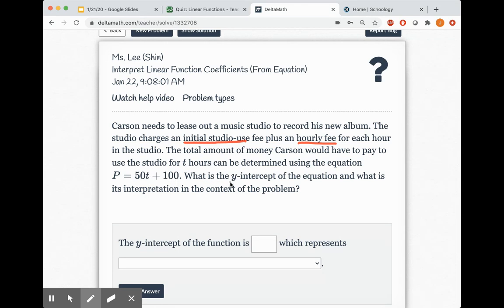The question is asking, what is the y-intercept of this equation? What is the interpretation in the context of the problem? So this is really similar to the warmup we've been doing. So let's take a look at this equation. What is the y-intercept in this equation? Y-intercept is 100. And then when they're asking what is the interpretation in the context of the problem, they're asking you, what does that 100 mean in terms of this story about Carson and his music studio?